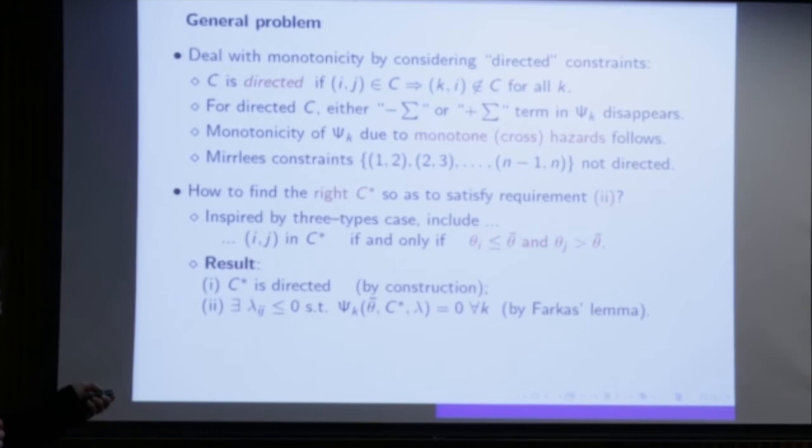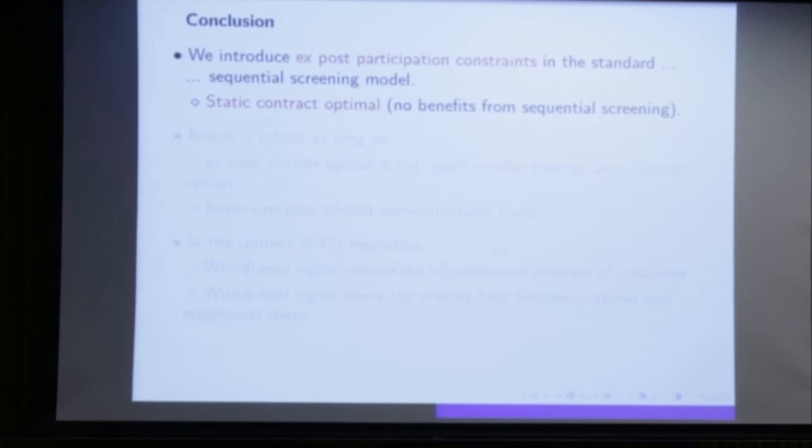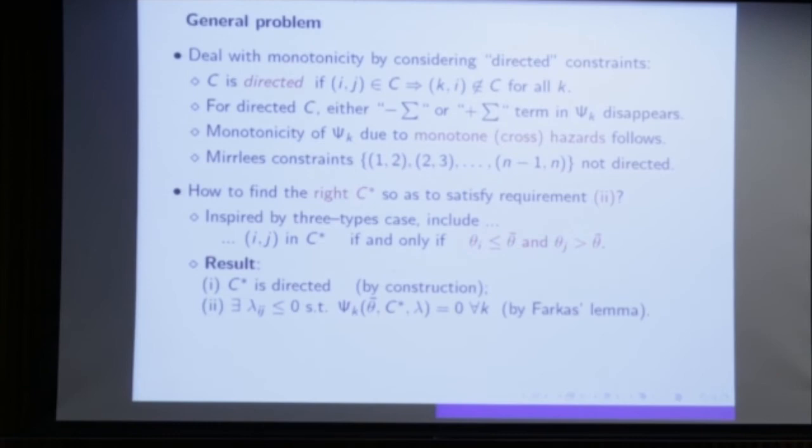That is the proof — it takes more than one page, but substantially less than 40. To conclude: we introduce an ex-post participation constraint into the standard sequential screening model and show that static contracts are optimal. You do not want to screen sequentially even though you can — it is not an infeasibility result; the principal could do sequential screening, but it is simply too costly.